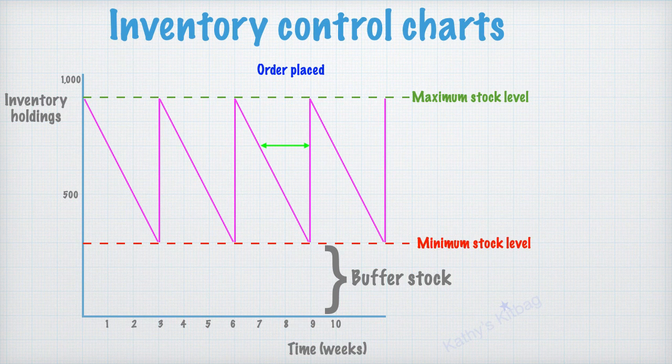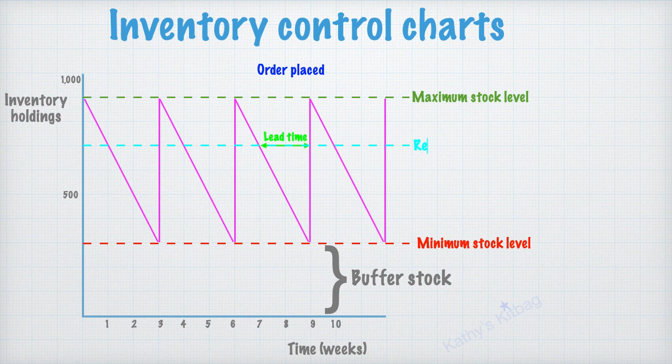So what you can do now is just plot your horizontal line across there. And that will tell you with a two week lead time, you need to be ordering stock when your stock has fallen to 700 units.